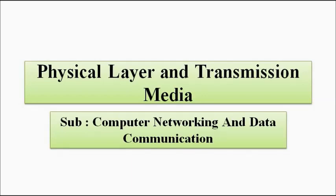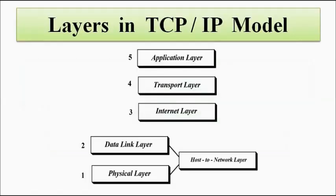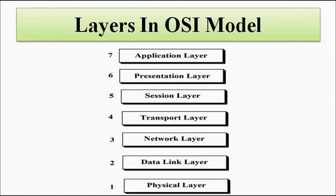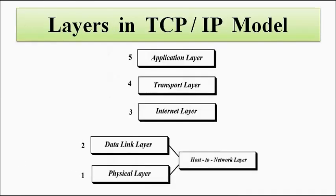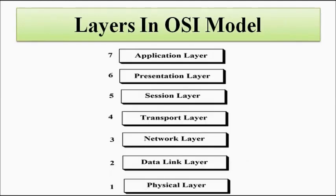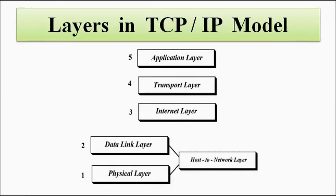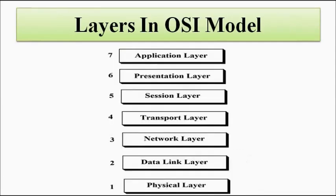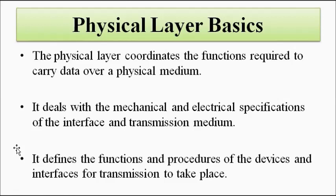Now we will discuss the individual layers in the OSI model or the TCP/IP model. As I mentioned in the previous video, whether it is the TCP/IP model or the OSI model, each consists of a layered architecture that functions at various levels. Both models have the physical layer at the bottom, so we will start with the physical layer.